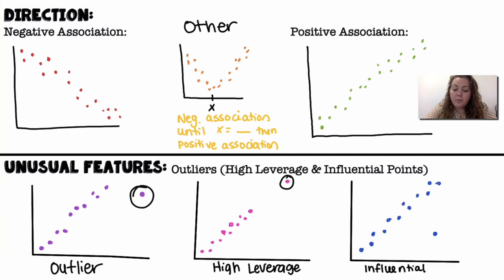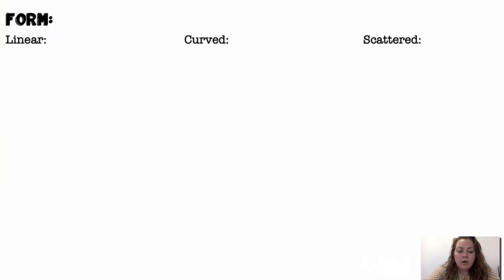And then, influential points are points that are going to really greatly change the slope of that line of best fit, the line that's kind of going through the center.